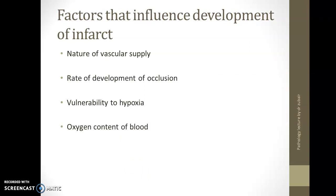What are the factors that influence development of infarct? First is the nature of vascular supply. If there is an organ with plenty of collateral channels, the effect of infarct will not be that much. While on the other hand, an organ with end arterial supply like the spleen does not have much collateral vessels, so the effect of the infarct is much greater.